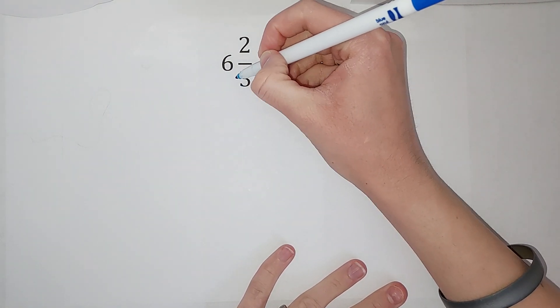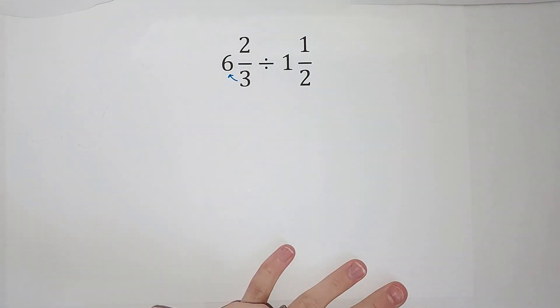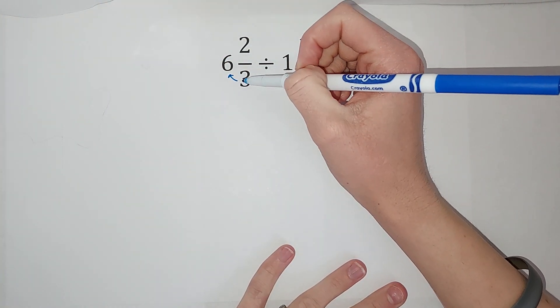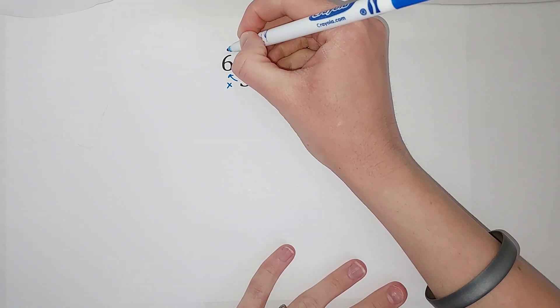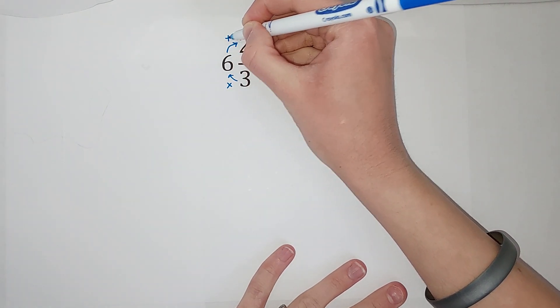We take our denominator and multiply it by our whole number here. So six times three gives me 18. And then we add the numerator.